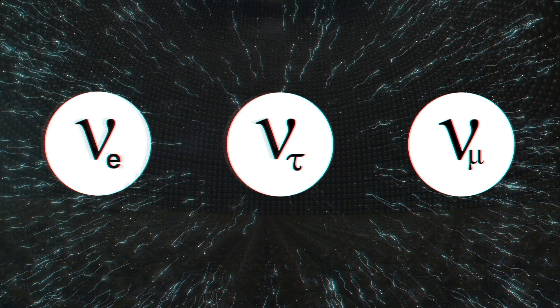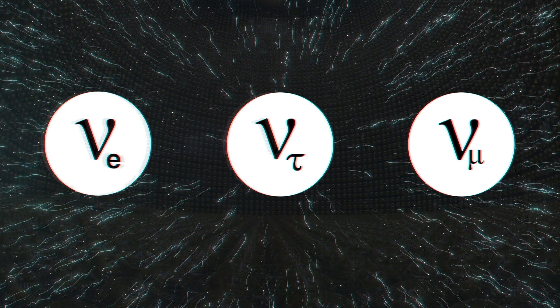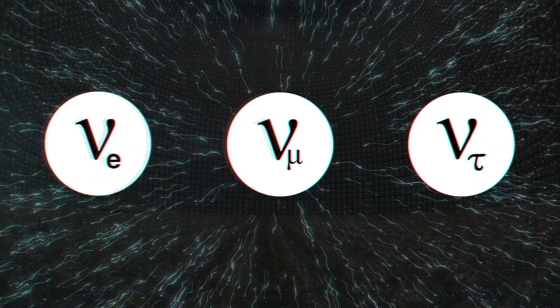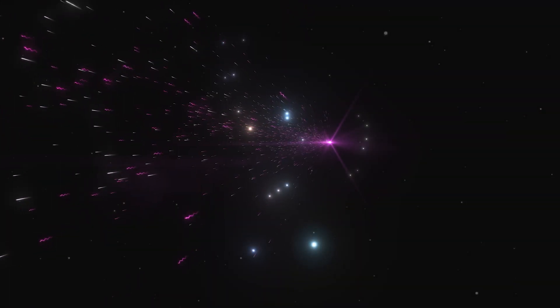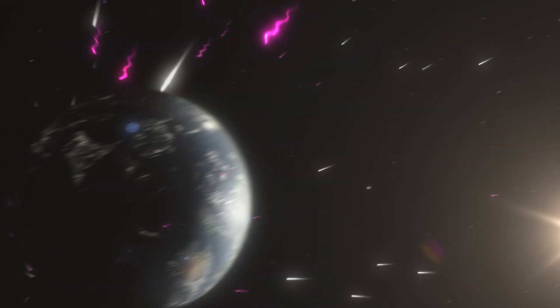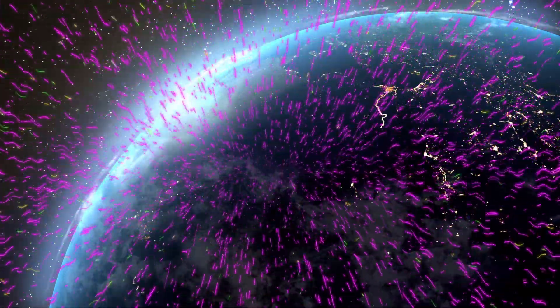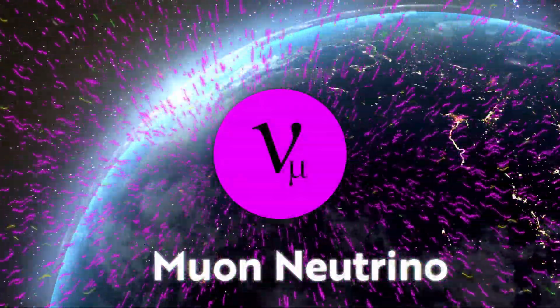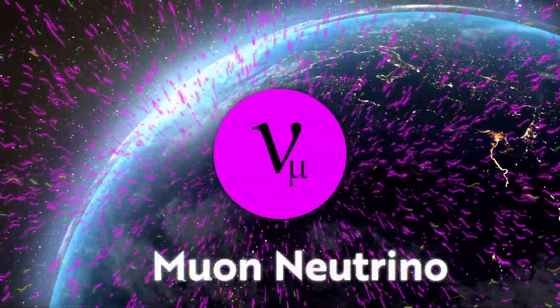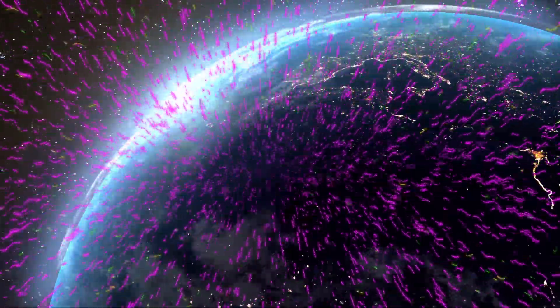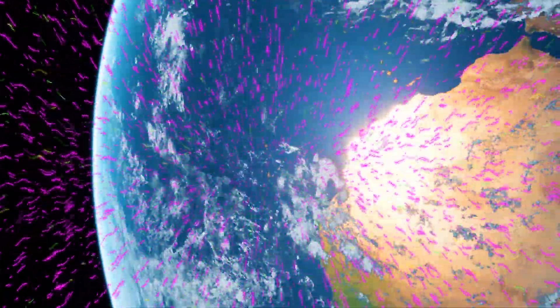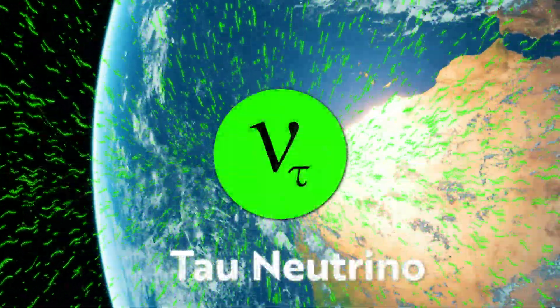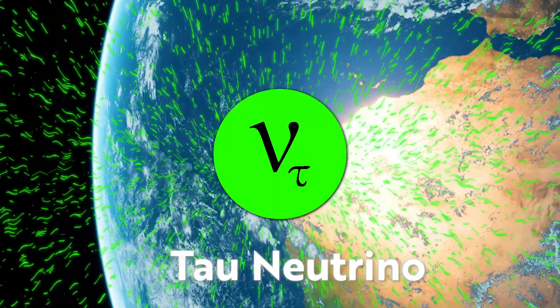However, in the Super-Kamiokande experiment, Japanese scientists realized that neutrinos were able to oscillate or change from one flavor to another. When measuring atmospheric neutrinos produced by cosmic rays slamming into the Earth's atmosphere, the Super-Kamiokande scientists observed that muon neutrinos coming from the opposite side of the Earth were disappearing slightly more often than expected. This disappearance was consistent with the neutrinos oscillating into another flavor, in this case likely tau neutrinos, which Super-Kamiokande could not easily detect.